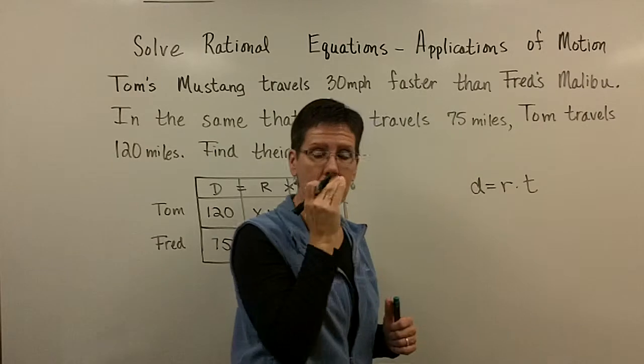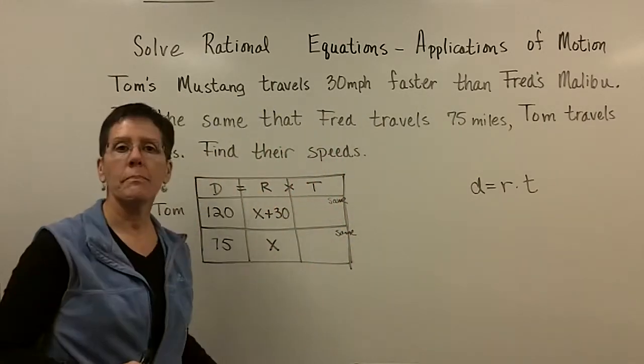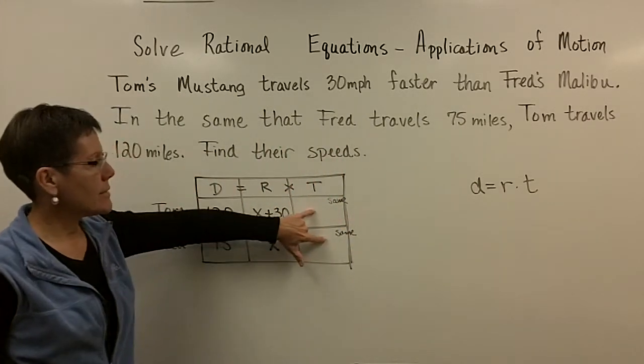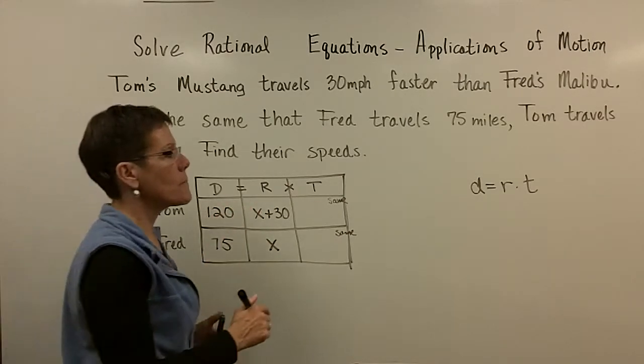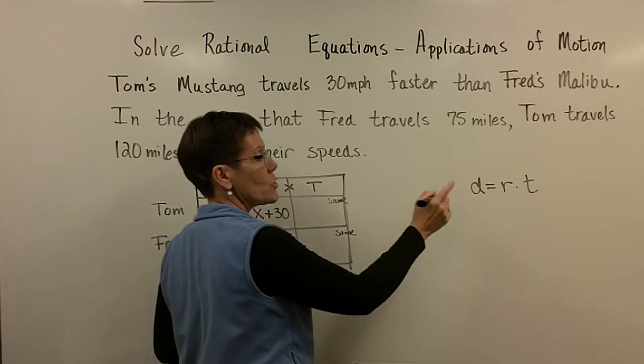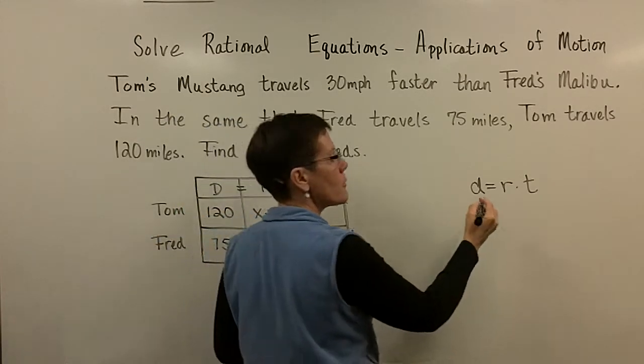Distance equals rate times time. That's the formula we're using here. Instead of putting T's in here, I'm going to put a fraction in here using these two expressions. So I want a fraction. So I'm going to solve this equation for another variable.